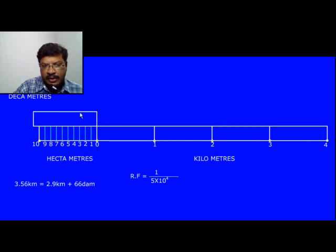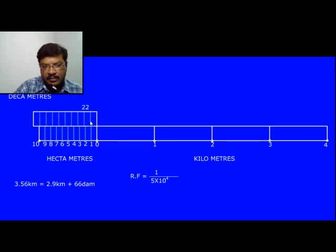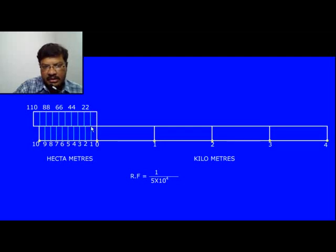Dividing 110 decameters into 10 parts gives each part a distance of 110 divided by 10, which is 11 decameters. So the divisions on the Vernier scale are 11, 22, 33, 44, 55, 66, 77, 88, 99, and 110. On the main scale each part is 10 decameters, but on the Vernier scale each part is 11 decameters — the difference is 1 decameter. In the same way you get 2 decameters, 3 decameters, and so on.